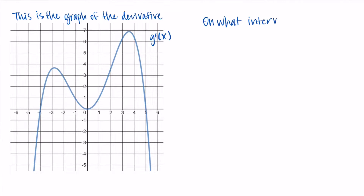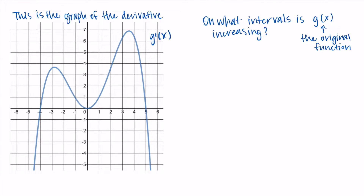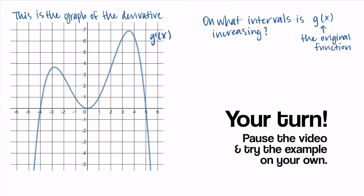The first thing I'm going to ask is on what intervals is g, the original function, increasing? Pause the video and give this a try. To do this, remember that increasing means the derivative is positive — specifically, the outputs of the derivative are positive. Knowing this, give it a shot and see what you come up with.